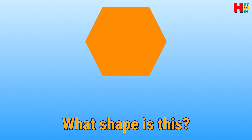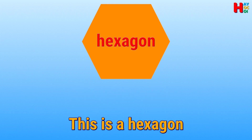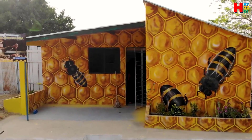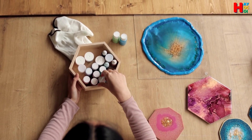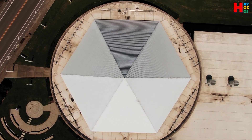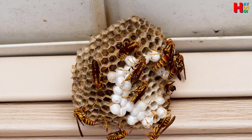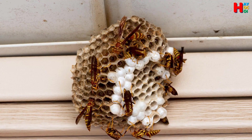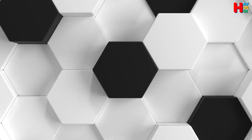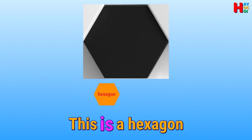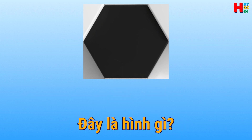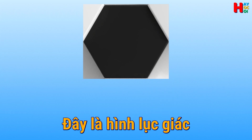What shape is this? This is a hexagon. This is a hexagon. What shape is this? This is a hexagon. Đây là hình gì? Đây là hình lục giác.